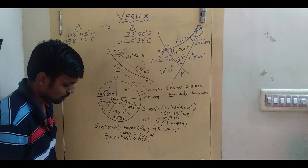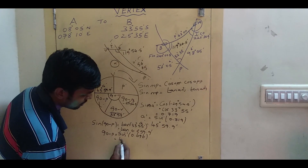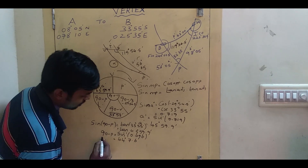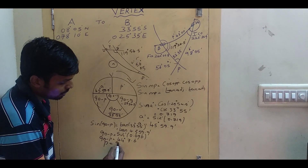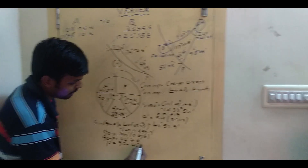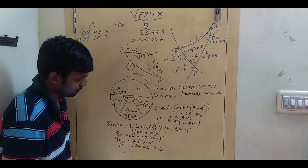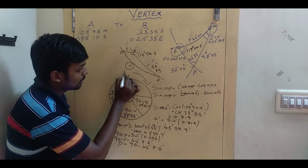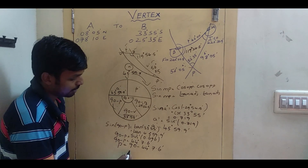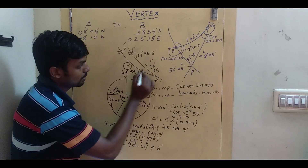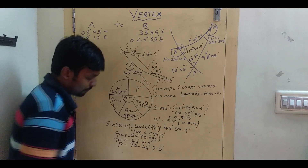Taking sine inverse of that value gives 44° 07.6'. Since 90° minus P = 44° 07.6', then P = 90° − 44° 07.6' = 45° 52.4'. So A' = 45° 59.9' and P = 45° 52.4'.